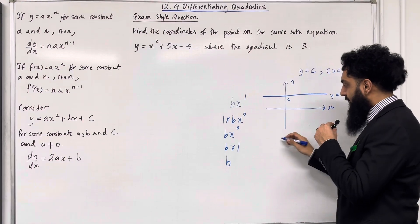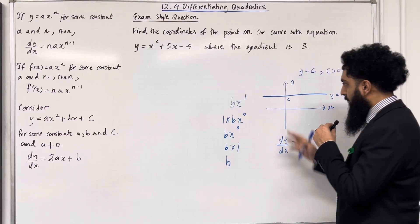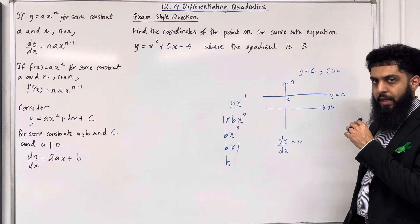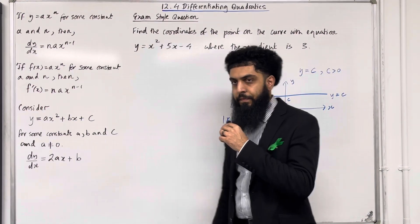y equals c will be a flat horizontal line cutting the y-axis at c. Now what you notice is that the gradient dy to dx is equal 0. It does not have a steepness. It's a flat horizontal line. This is why when you differentiate a constant, you get 0.